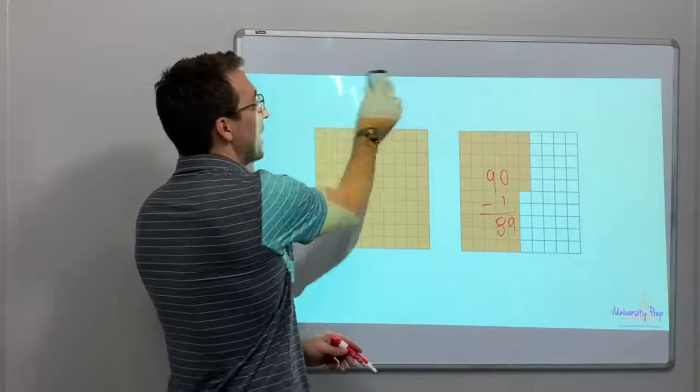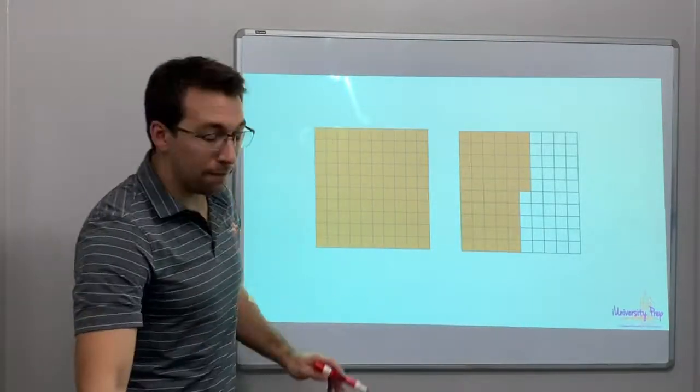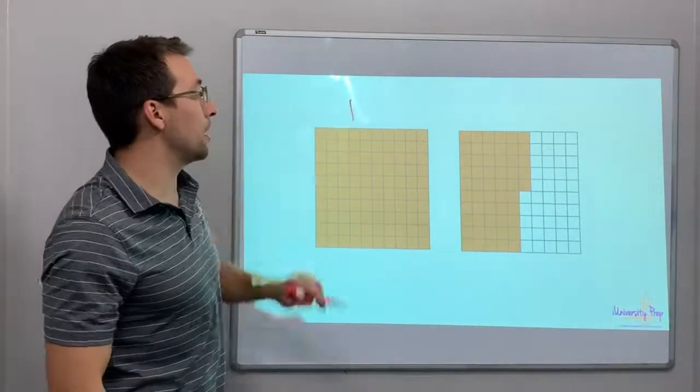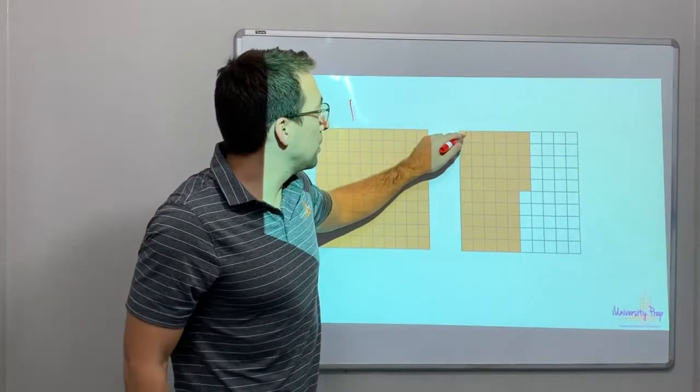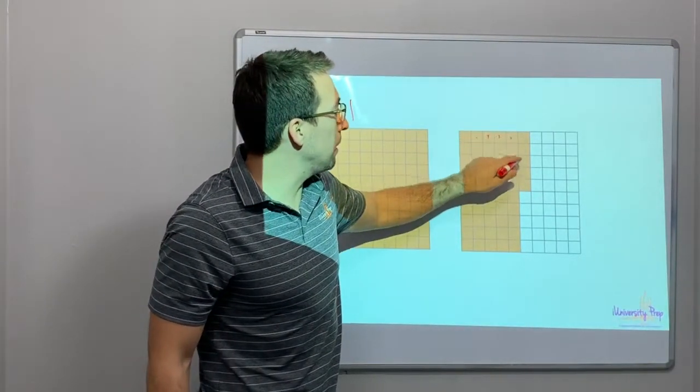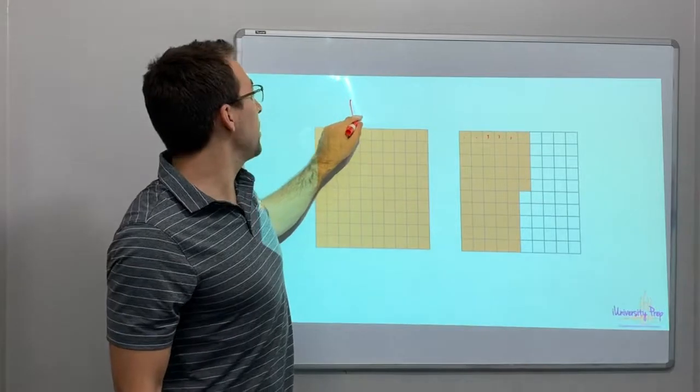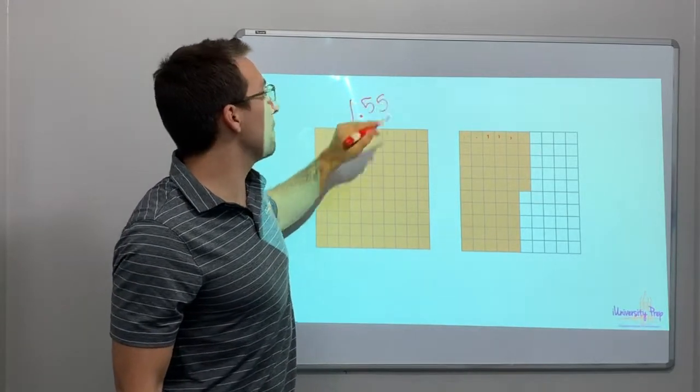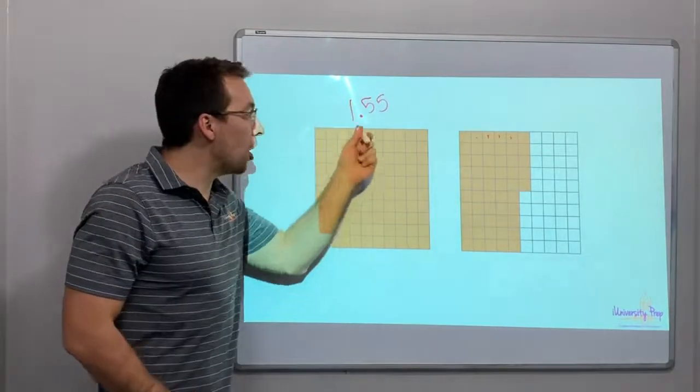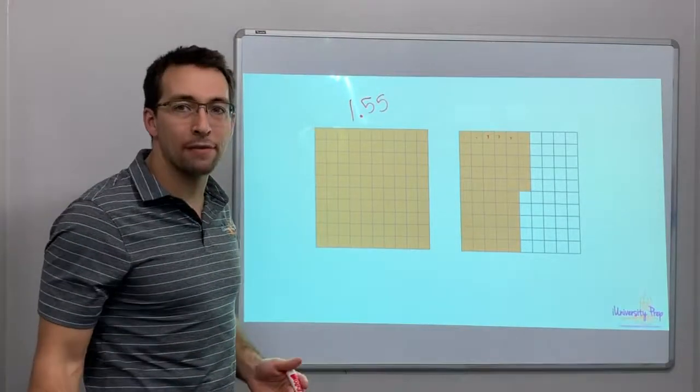And again, you can add the models together. So, we have a full solid model. That's one. And then we have ten, twenty, thirty, forty, fifty. Fifty-one, two, three, four, five. One and fifty-five hundredths. A dollar and fifty-five cents. One and fifty-five hundredths.